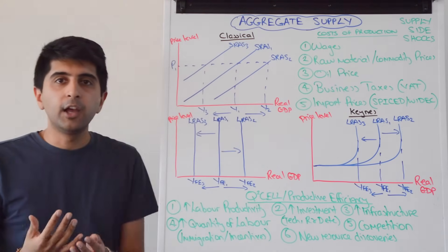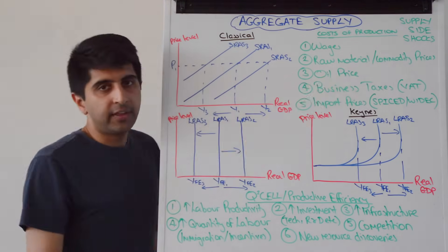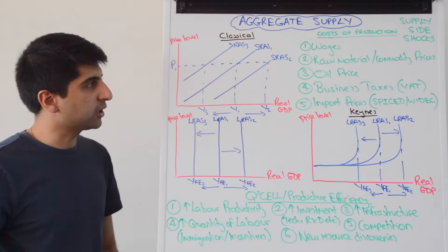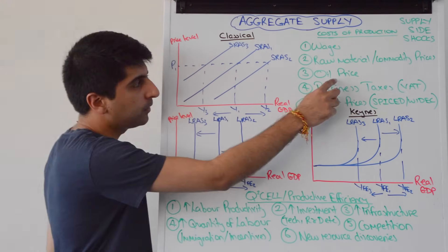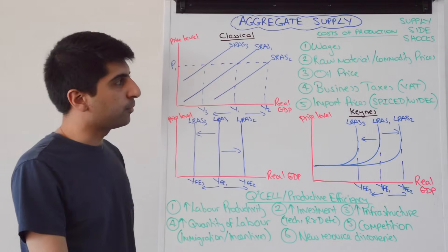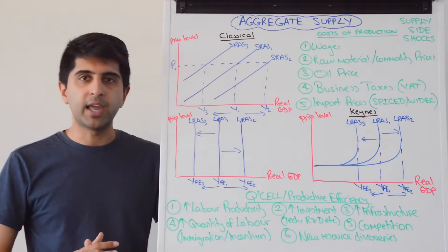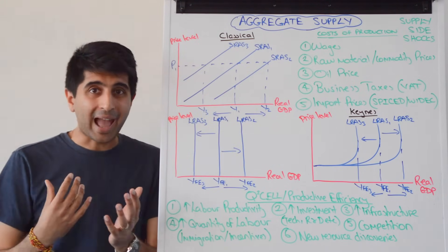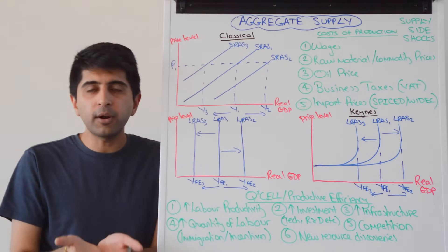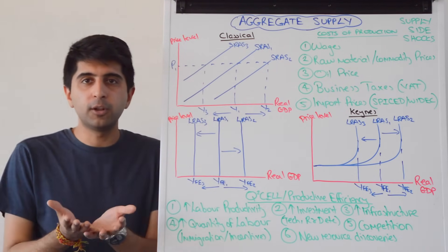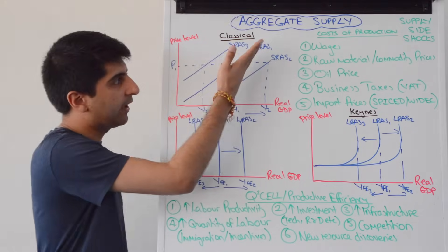If raw material or commodity prices go up, then costs of production will rise for firms, shifting SRAS to the left. If they fall, SRAS will shift to the right. Oil is a major cost of production — for the UK economy, for example, it's okay to keep the oil price as a separate factor, because oil is such an important input for all firms, whether for transportation, accessing goods, or actual production. When oil price goes up, costs rise and SRAS shifts left; when it decreases, SRAS shifts right.